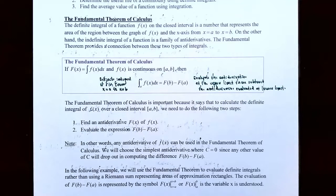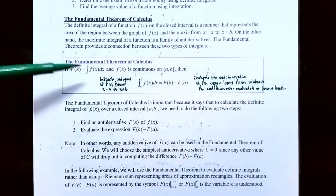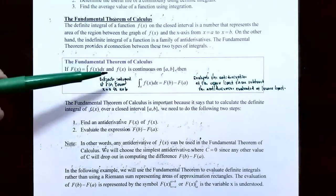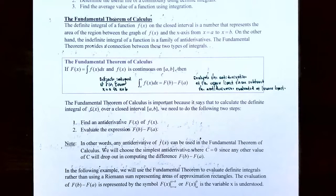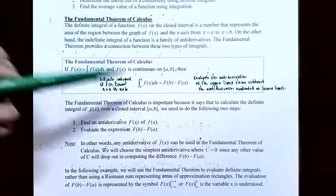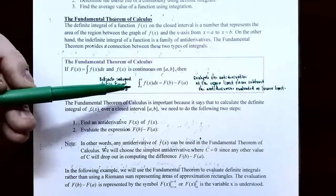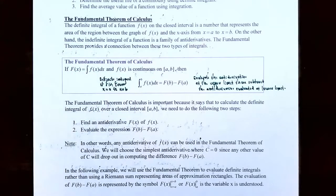The Fundamental Theorem provides a connection between these two different types of integrals. If capital F of x is the family of antiderivatives for f of x — so the indefinite integral of f of x dx is capital F of x — and lowercase f of x is continuous on the closed interval a to b, then the definite integral from x equals a to x equals b equals capital F(b) minus capital F(a). Here, a is the lower limit of integration, b is the upper limit, f of x is the integrand, and x is the variable of integration.